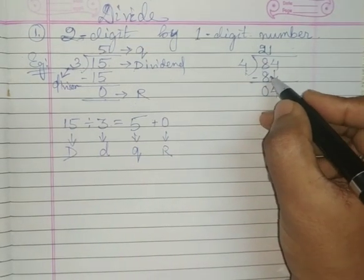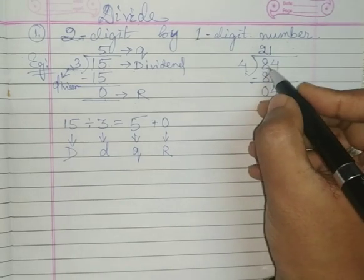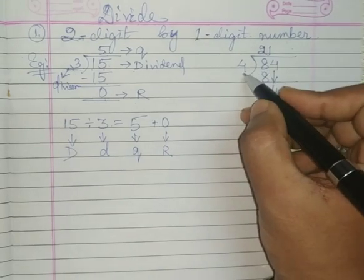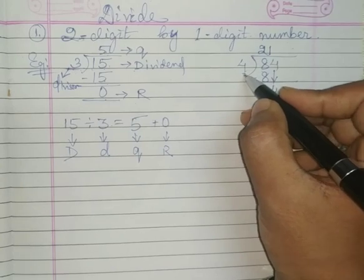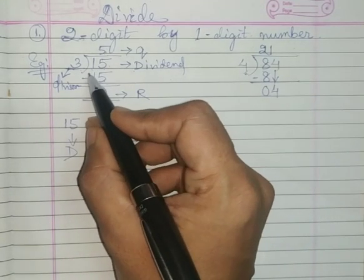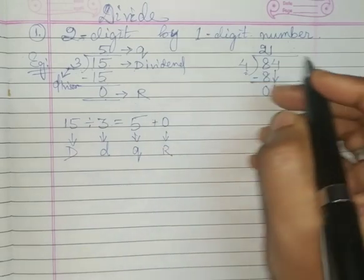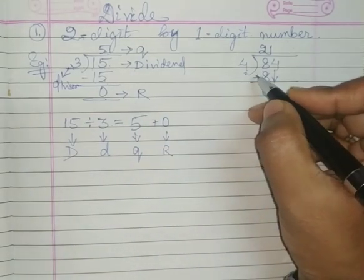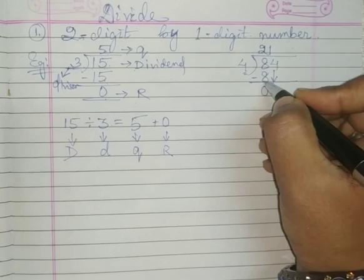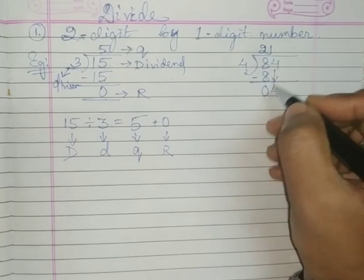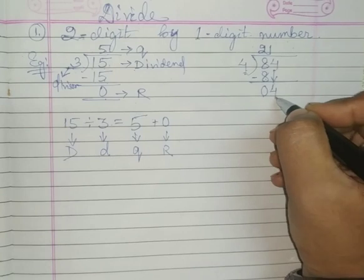Now let's go for another example: 84 divided by 4. What happens here? In the previous example you divided it at once, but here you have to go step by step. 4 twos are 8. Now 8 minus 8 is 0. Bring 4 down.